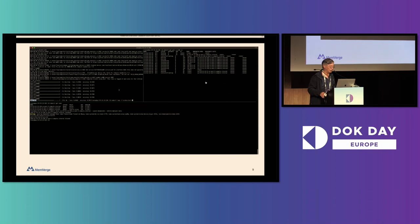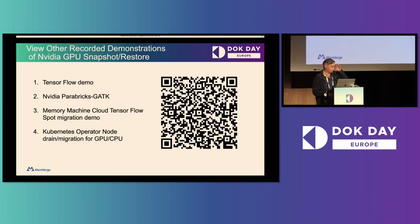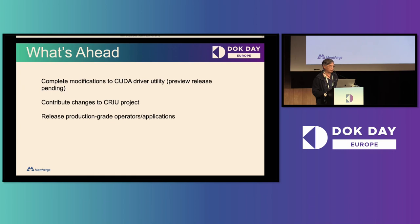We're saving a lot of time by enabling hot restart of these GPU workloads on Kubernetes. There are other recorded demos you can click on: TensorFlow on bare metal, a Parabricks demo which is an HPC workload for computational biology from NVIDIA, our own curated Memory Machine Cloud batch app platform used for spot instance wave riding, and the same Kubernetes operator you just saw. Looking ahead, we are working with NVIDIA to finish up these modifications to the utility. There'll be a preview release sometime between now and the 12.5 CUDA release, and we'll be contributing the changes to CRIU. We hope to collaborate with you folks in developing production-grade operators and applications.